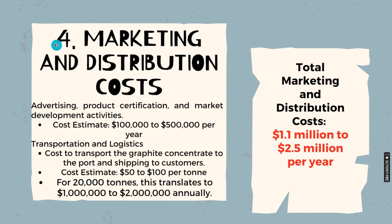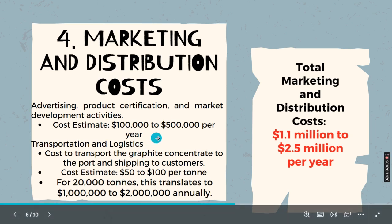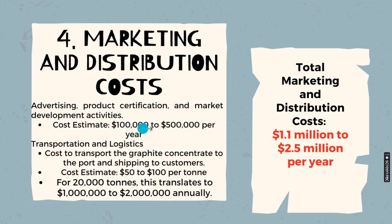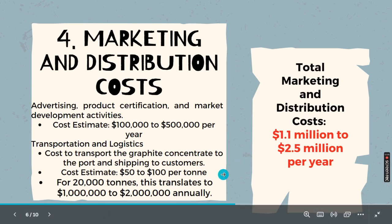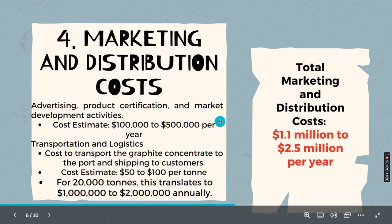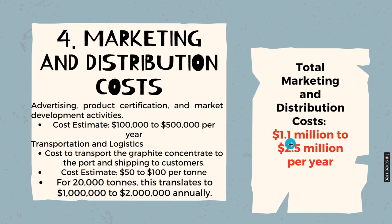The fourth category is marketing and distribution costs. This covers advertising, product certification, and standard maintenance for market development activities — estimated at 100,000 to 500,000 US dollars per year. Transportation and logistics — the cost to transport graphite concentrate to the port and ship to customers — is estimated at 50 to 100 dollars per ton. For 20,000 tons annually, this becomes 1,000,000 to 2,000,000 dollars annually. Total marketing and distribution costs are approximately 1.1 to 2.5 million per year.